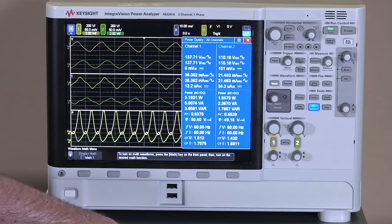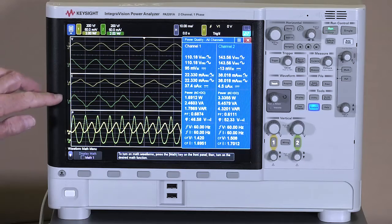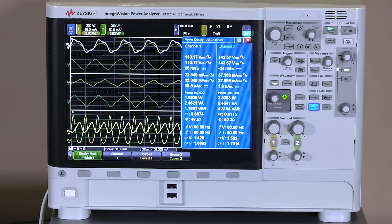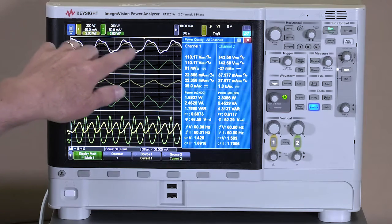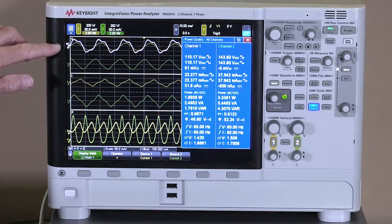So let me go ahead and switch direction of the motor real quick. Then we're going to use the math feature inside the power analyzer to add our currents together. We're going to overlay it on top of the voltage, and you can see it's just right on top of it. So a really cool little AC motor that has a great power factor.